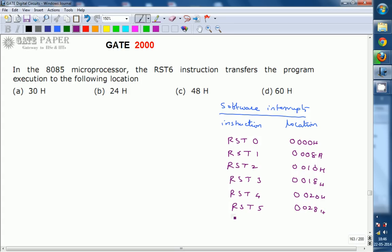RST6, 0030H, RST7, 0038H. So these are the 8 software interrupts and the corresponding memory locations.